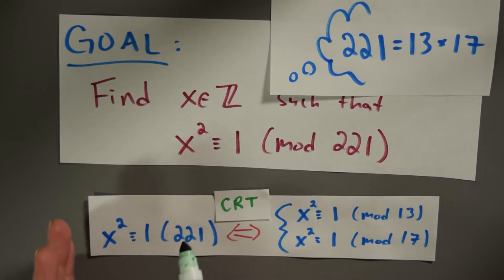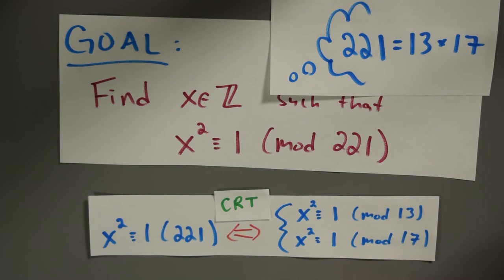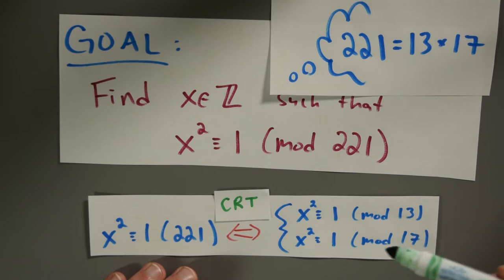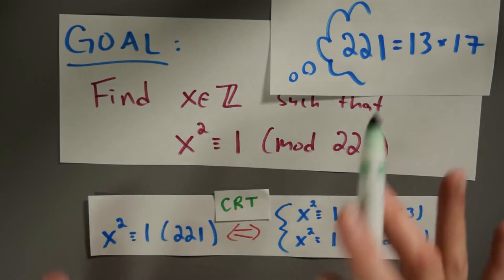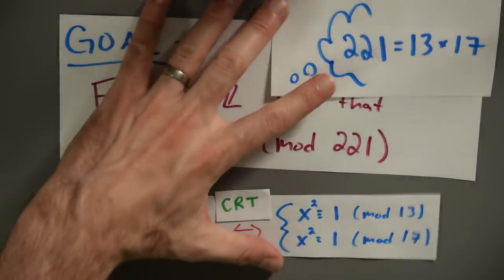I want to know all of the x's that satisfy x squared≡1 (mod 221). It's enough to find all the x's satisfying these two conditions simultaneously: x squared≡1 (mod 13) and x squared≡1 (mod 17). So let's explore these two conditions. I'll focus on the first — let's figure out for which integers x it is the case that x squared≡1 (mod 13).